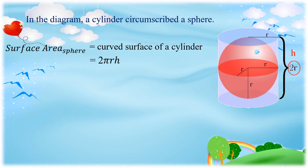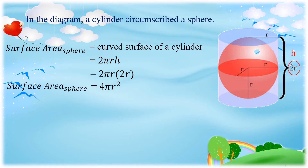Since here H is equal to 2R, we are going to substitute the value of H, which is equal to 2R. So we have 2π R times 2R. Simplifying further, we get 4πR squared. That is the surface area of a sphere.